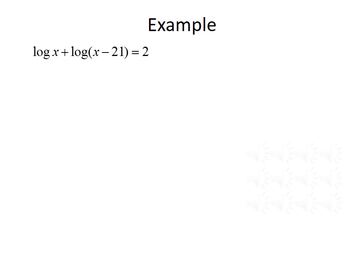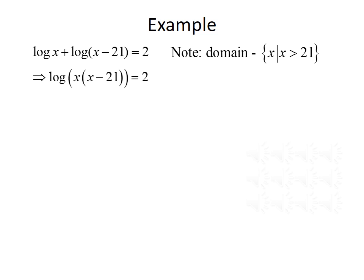Here's another example: log of x plus log of (x minus 21) equals 2. We'll start by noting the domain, which is the set of x such that x is greater than 21. Otherwise, we'll have a negative number inside one of our logs. Now we can go about solving the equation.